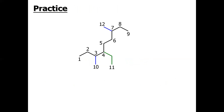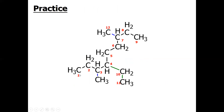Let's see some practice. If I ask you to find the number of primary, secondary, or tertiary hydrogens, let's go through it. Carbon number one — is it primary, secondary, or tertiary? This is a primary hydrogen because carbon one is a one-degree carbon. Carbon two, C2, is two-degree because this CH2 is bonded with two other carbons, so its hydrogen is also two-degree hydrogen. The CH at carbon three is bonded with three other carbons, making it a three-degree carbon, and so its hydrogen is a three-degree hydrogen.